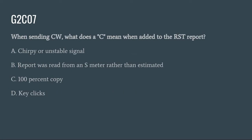G2C07: When sending CW, what does C mean when added to the RST report? A. Chirpy or unstable signal. B. Report was read from an S meter rather than estimated. C. 100% copy. Or D. Key clicks. The correct answer is A: chirpy or unstable signal.